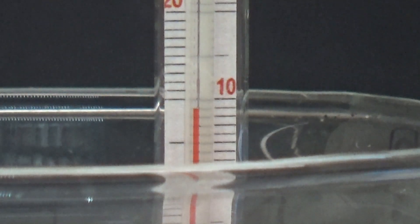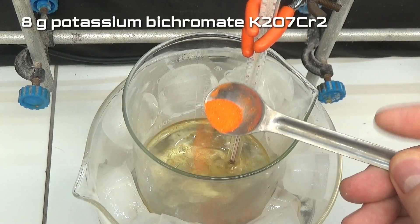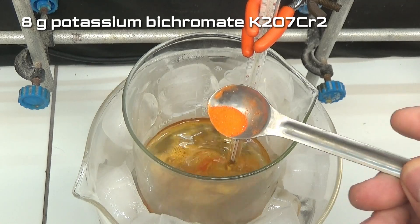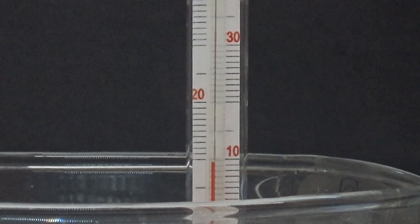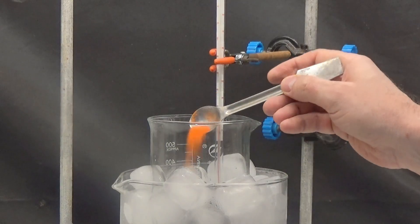When the temperature is between 5 and 10 degrees, add 8g of potassium dichromate in small portions. Do not allow the temperature to exceed 10 degrees. The 8g are added in a time of 20 minutes.